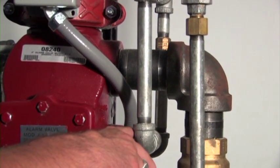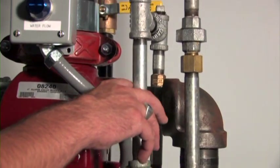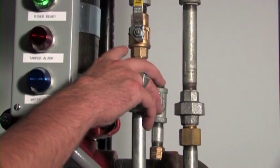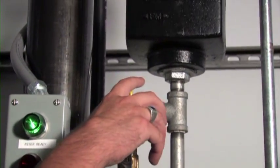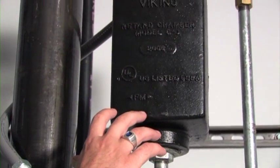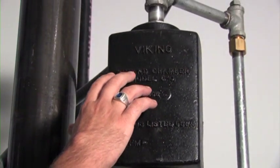When the clapper lifts, water will exit the valve, rise through the trim pipe into this empty chamber, which is called a retard chamber. A retard chamber is a mechanical delay prior to an alarm.